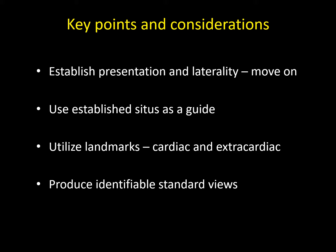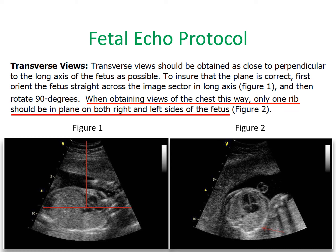Most importantly, you want to produce identifiable standard views — this is critically important for a successful scan. When starting in the transverse views through the fetal thorax, align the fetal spine as perpendicular as possible to the plane of insonation. At Children's Healthcare of Atlanta, we rotate counterclockwise 90 degrees, which allows us to obtain the fetal thorax in a proper standard format — seeing one rib on either side of the fetal thorax and a really nice four-chamber view of the fetal heart from base to apex.